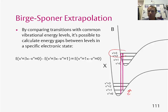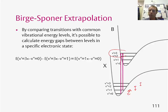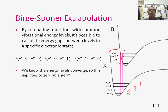We can do this for lots of pairs of transitions in the spectrum, working out successive energy gaps all the way up, so we can eventually work out the dissociation energy. This gap is eventually going to go to zero because we know that the vibrational energy levels of a molecule converge as you go to large V — that's because it's an anharmonic system.